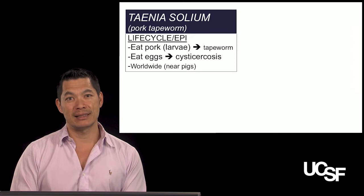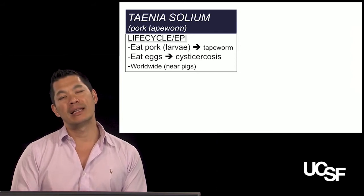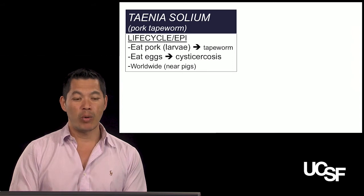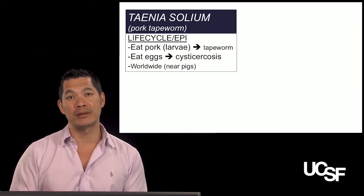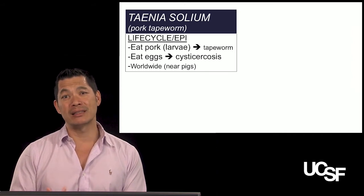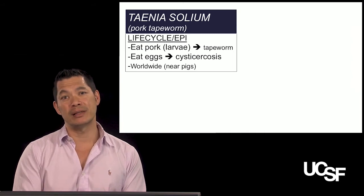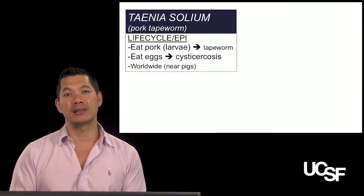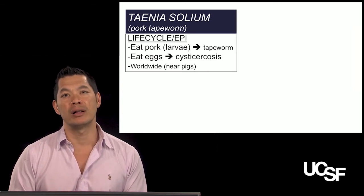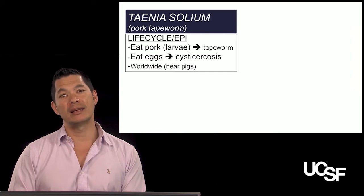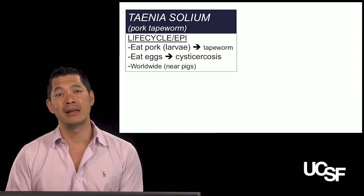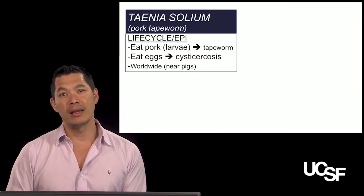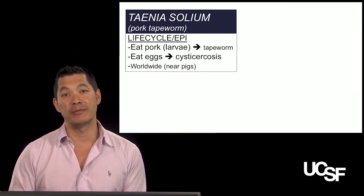If you eat undercooked pork, you mainly ingest larvae, causing GI disease — a typical worms-in-the-stomach variant. However, if you ingest eggs, they can hatch into larvae in your GI system; the larvae burrow into the bloodstream and travel to other parts of the body. Pork tapeworm loves the brain, causing neurocysticercosis. Pigs are the definitive host, but even vegetarians can get pork tapeworm if pig feces with eggs contaminate vegetables and drinks.